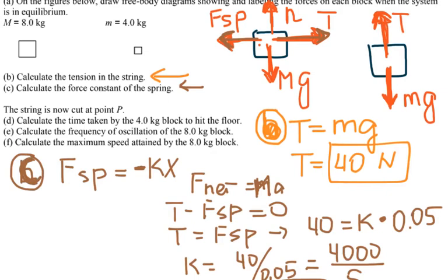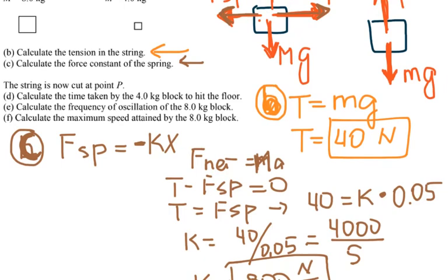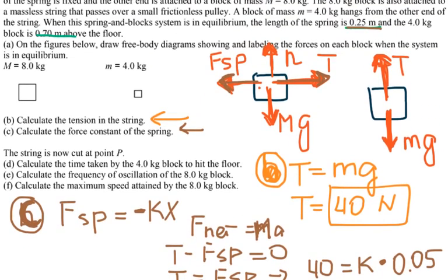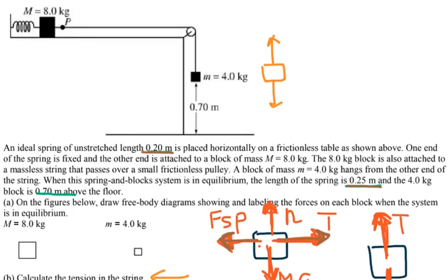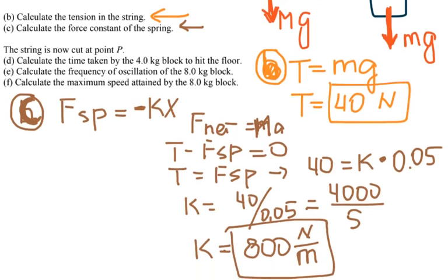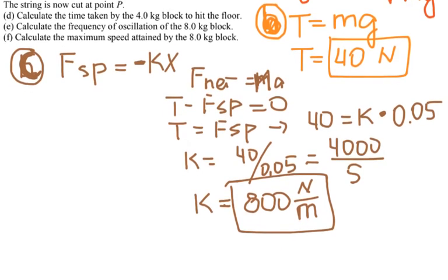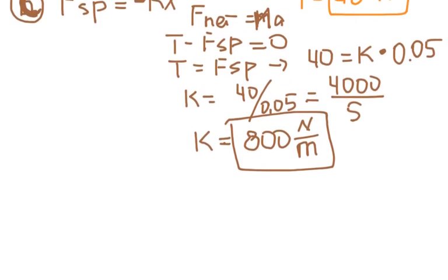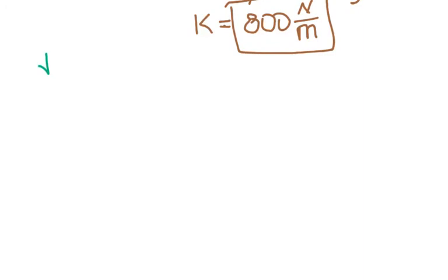For part D, calculate the time taken by the 4 kilogram block to hit the floor. The string is cut, and the block falls from 0.7 meters above the ground. I'll solve this using conservation of energy.